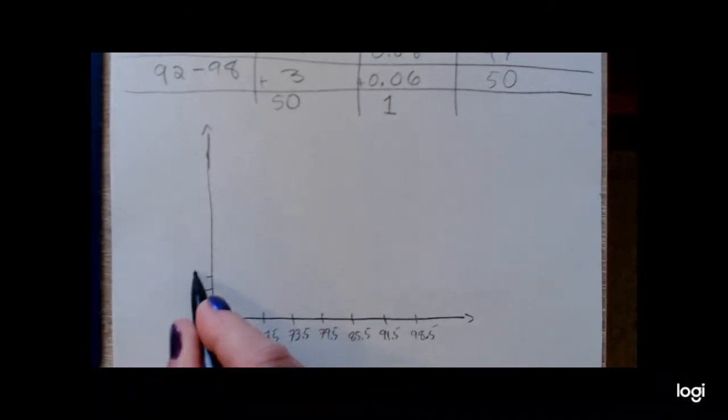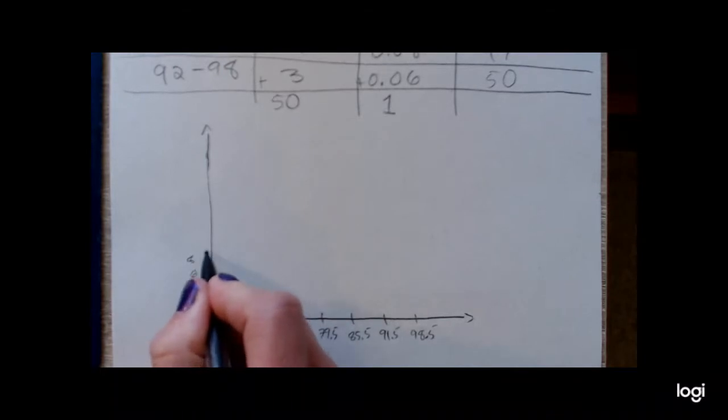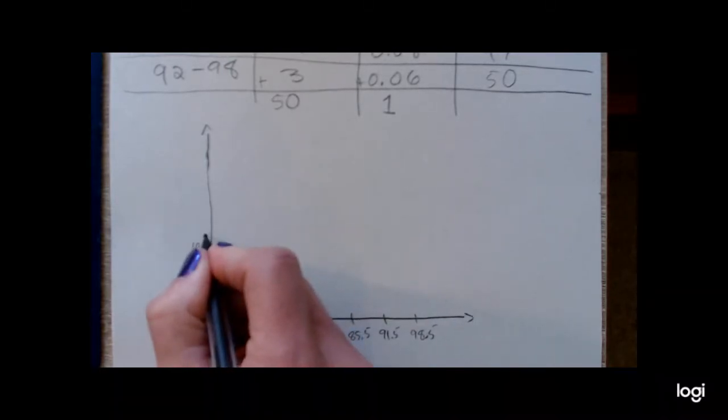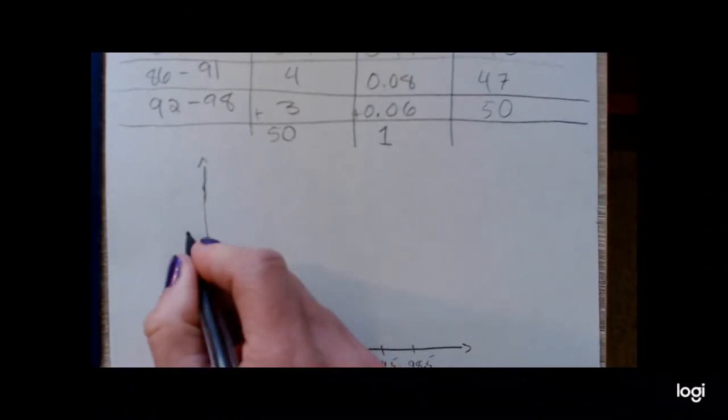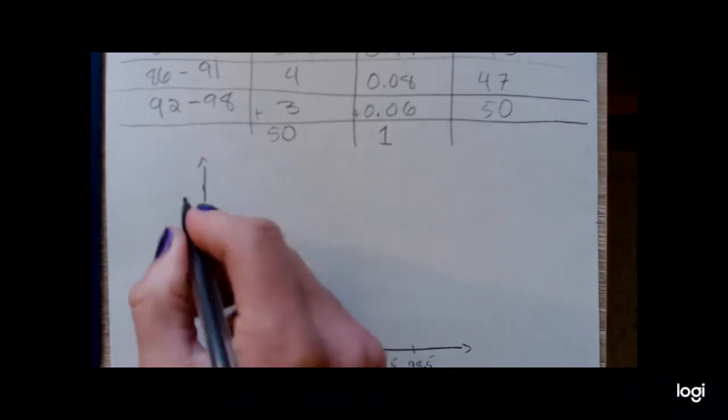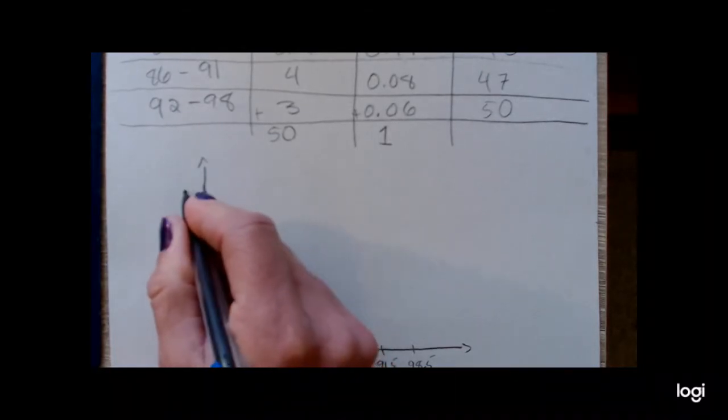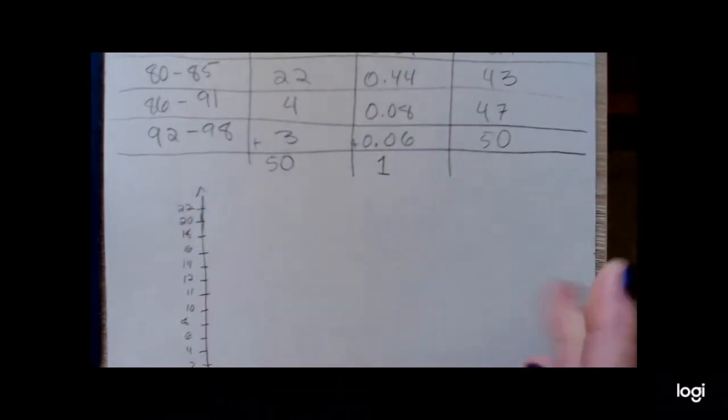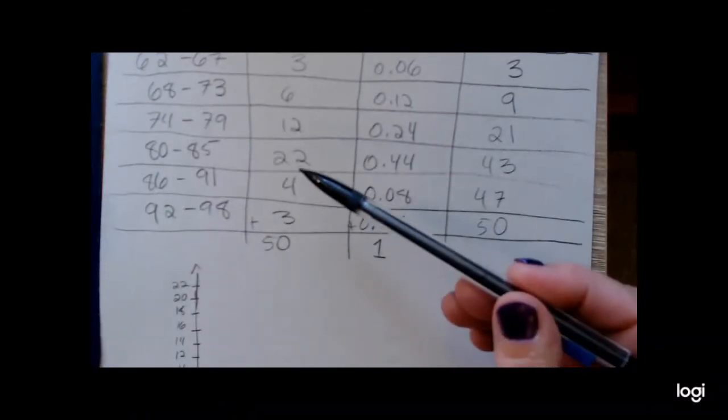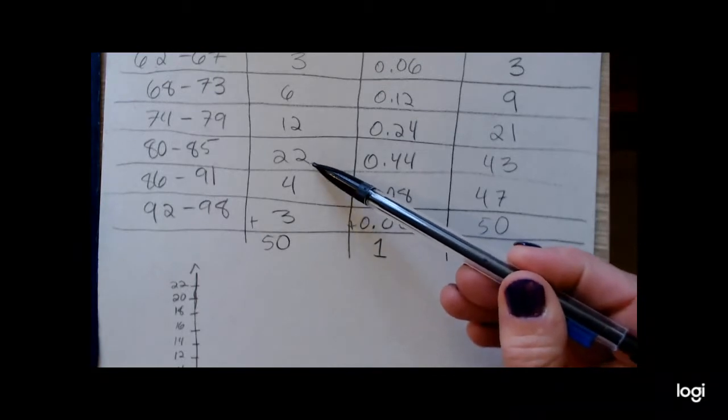Again, being as neat as I possibly can, trying to make these equally spaced and hopefully not running out of room. And I will need a 22, because looking at my data set, I do have a class that has 22 values.